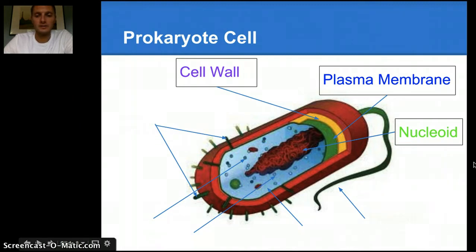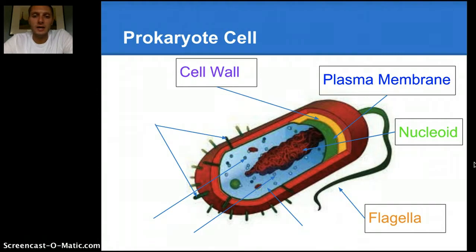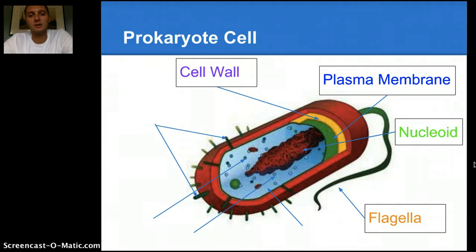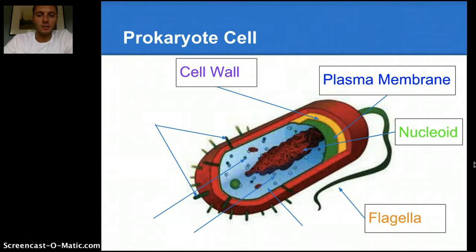Another thing that prokaryotes have is a flagella, and we'll actually be able to see some cells under the microscope throughout the year that have flagella — you can actually see the tail moving, and that's really helping to provide the cell a means of locomotion and movement. There's also cilia, which are little hair-like projections that also help provide movement or to provide a flow of food towards the cell in some characteristics, but flagella is the primary one for prokaryotic cells.